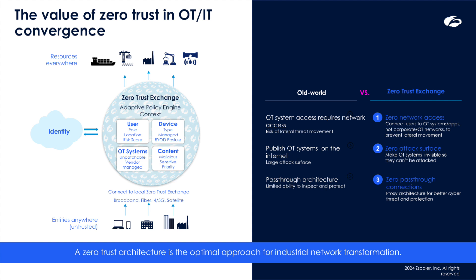Also, by partnering with industry leaders like Siemens, Zscaler ensures organizations can safely converge IT and OT systems, delivering secure remote access and robust protection against cyber threats. The benefits are clear: reduced cyber risk, uninterrupted operations, and enhanced safety for both personnel and equipment. With Zscaler's zero-trust exchange, businesses can confidently embrace IT-OT convergence and secure their digital transformation.